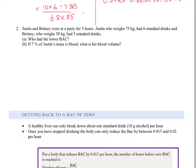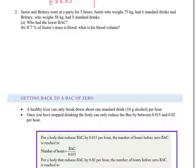Justin and Brittany were at a party for 5 hours. Justin, who weighs 75kg, had 6 standard drinks. Brittany, who weighs 85kg, had 5 standard drinks. Who had the lower blood alcohol concentration? Let's look at Justin first. N is 6 standard drinks, H was 5 hours, and M is 75kg.